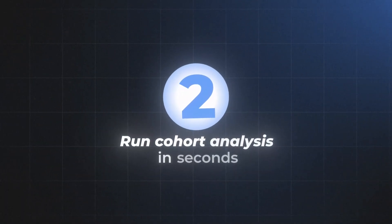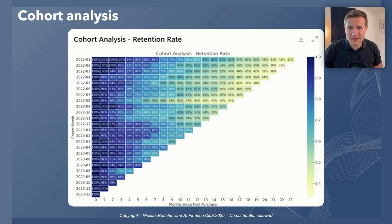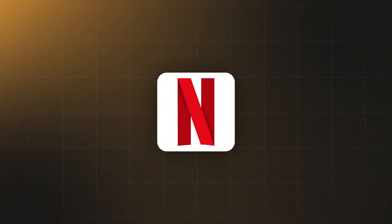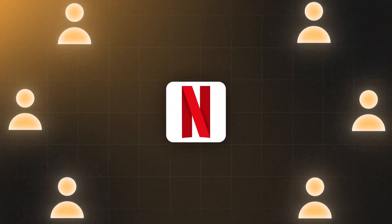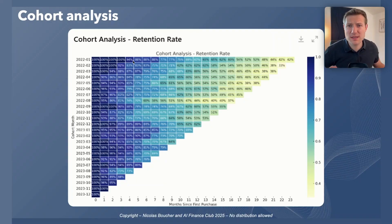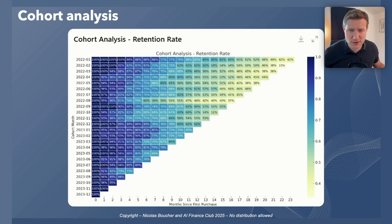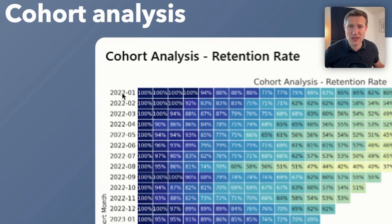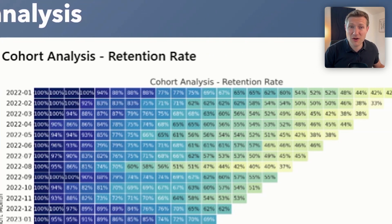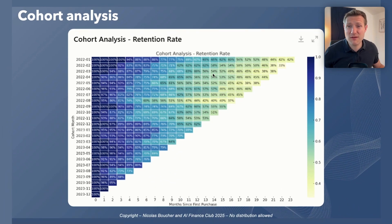The second part is about cohort analysis. Imagine you are working for Netflix — what you want to do is keep subscribers as long as possible. With this table, you can see which subscribers are staying the longest, ranging them by their month of subscription. In January 2022, the first four months everybody stayed, but slowly people started leaving — 6% left after five months, and after 23 months only 42% remained. That helps you see if you are improving or degrading your retention.